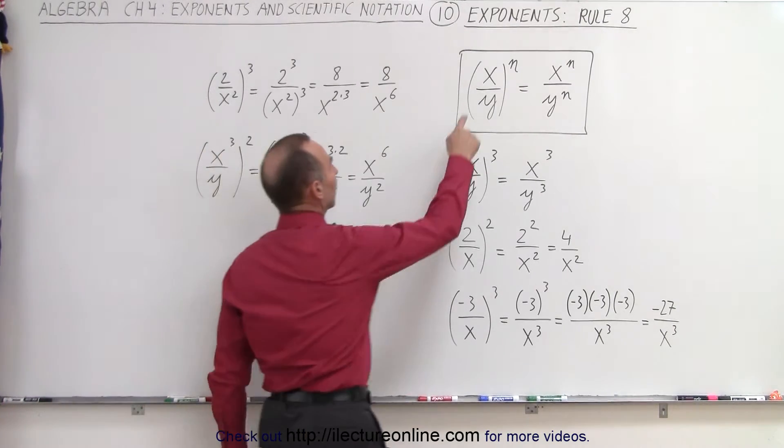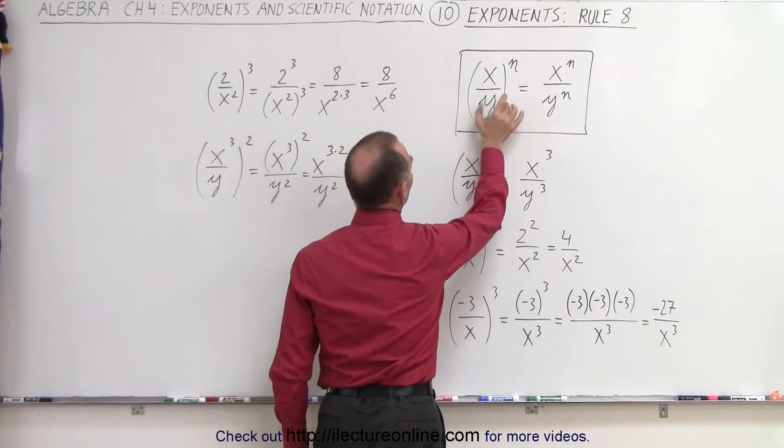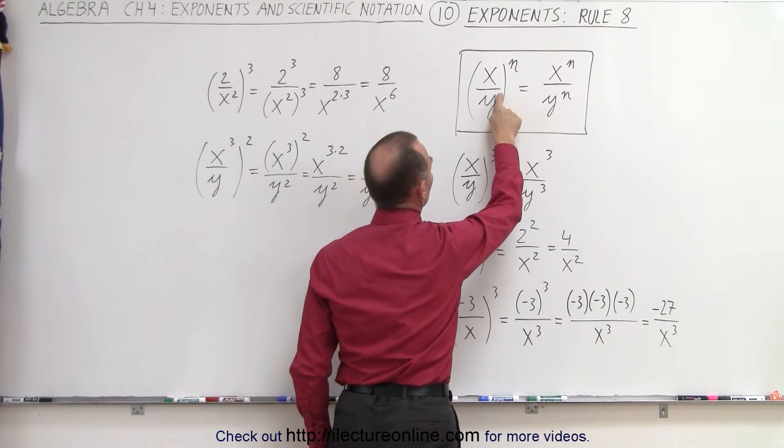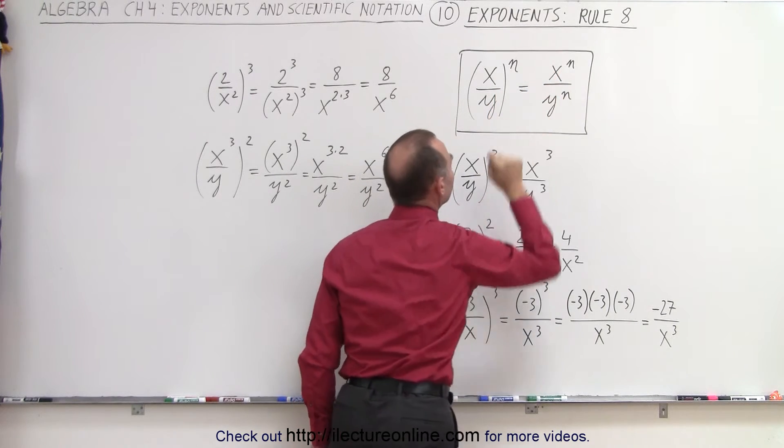For example, x divided by y, the whole fraction raised to an exponent. Then we realize that the exponent applies to the numerator as well as to the denominator, and so we end up with x to the n divided by y to the n.